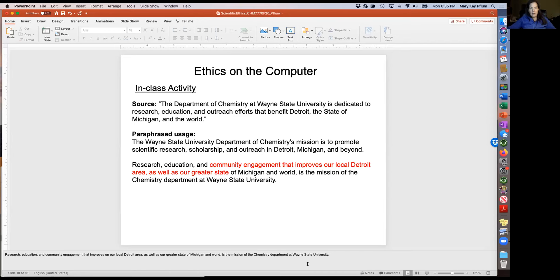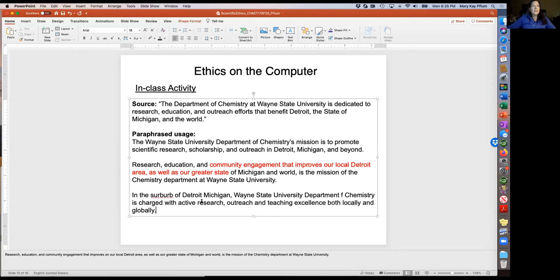And I see that now three more students have given us their thoughts on writing. So I'll put these up here. I really appreciate the participation. I love it. I'll put up this one. In the suburbs of Detroit, Wayne State University Department of Chemistry is charged with active research outreach and teaching excellence both locally and globally. Isn't that fantastic? Wonderful. And then I'll just read the other ones because I can't fit them on my slide. But another one, the main inspiration of the chemistry department at Wayne State University is to improve education and research, not only in Detroit, but also in the state of Michigan and the world. So you guys can look at the chat. Wonderful work, you guys. I'm really excited about the great writing that we're going to see in this class. And I think you guys are really learning the way to do that.